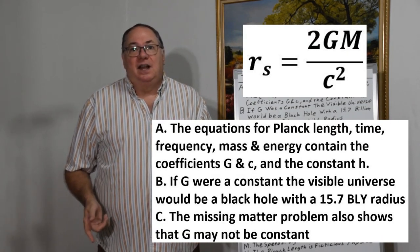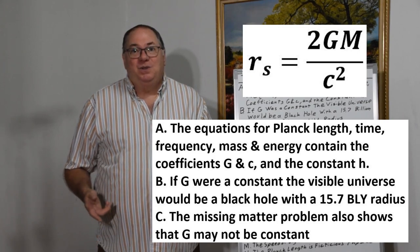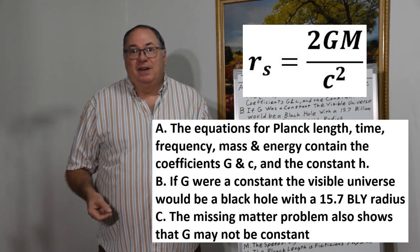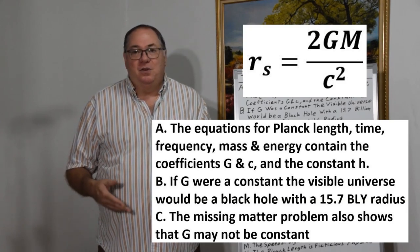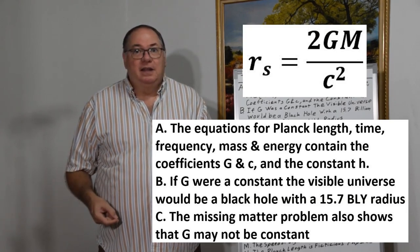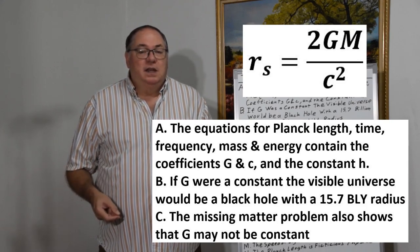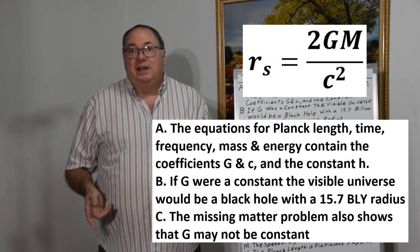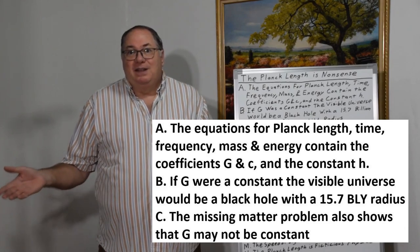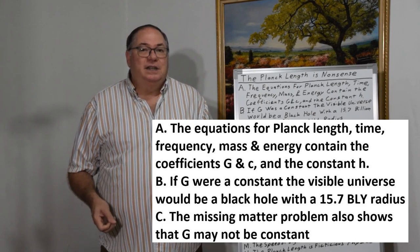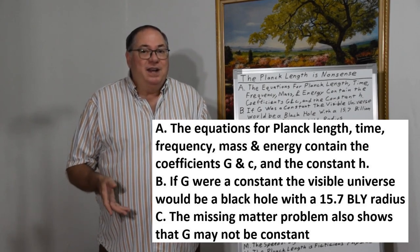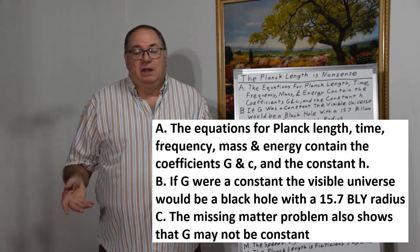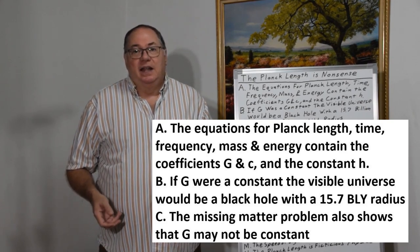We can tell that G isn't constant very quickly by calculating the Schwarzschild radius of the universe based on it weighing 10 to the 53 kilograms, which is a common number thrown out for the total amount of visible matter in the universe. When you do that, you get a black hole with a radius of 15.7 billion light years, slightly bigger than the observational range of the universe. So we're definitely not in a black hole. So G as a constant doesn't work for black hole calculations at intergalactic scales.